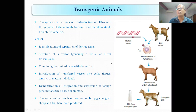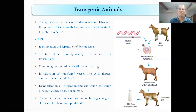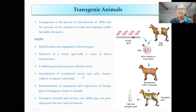The desired gene — for example, the isolated insulin gene — is combined with the vector, which is a retrovirus. Retroviruses carry RNA. The vector is then transferred into cells, tissues, embryos, or mature individuals.